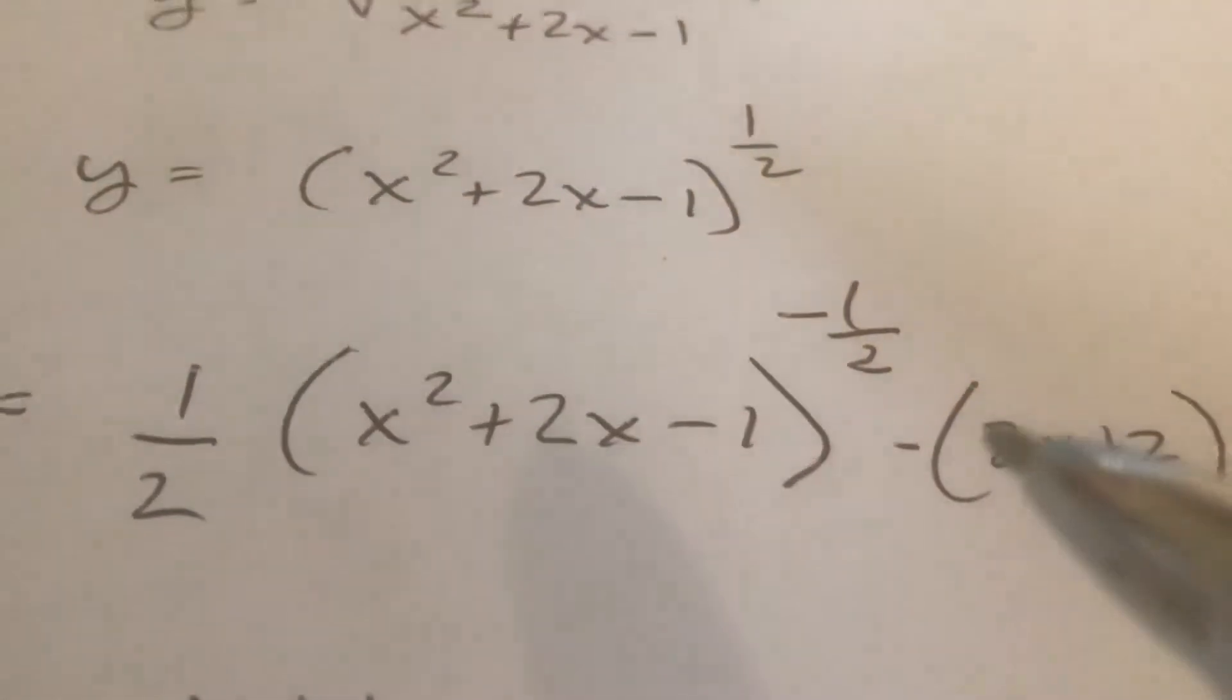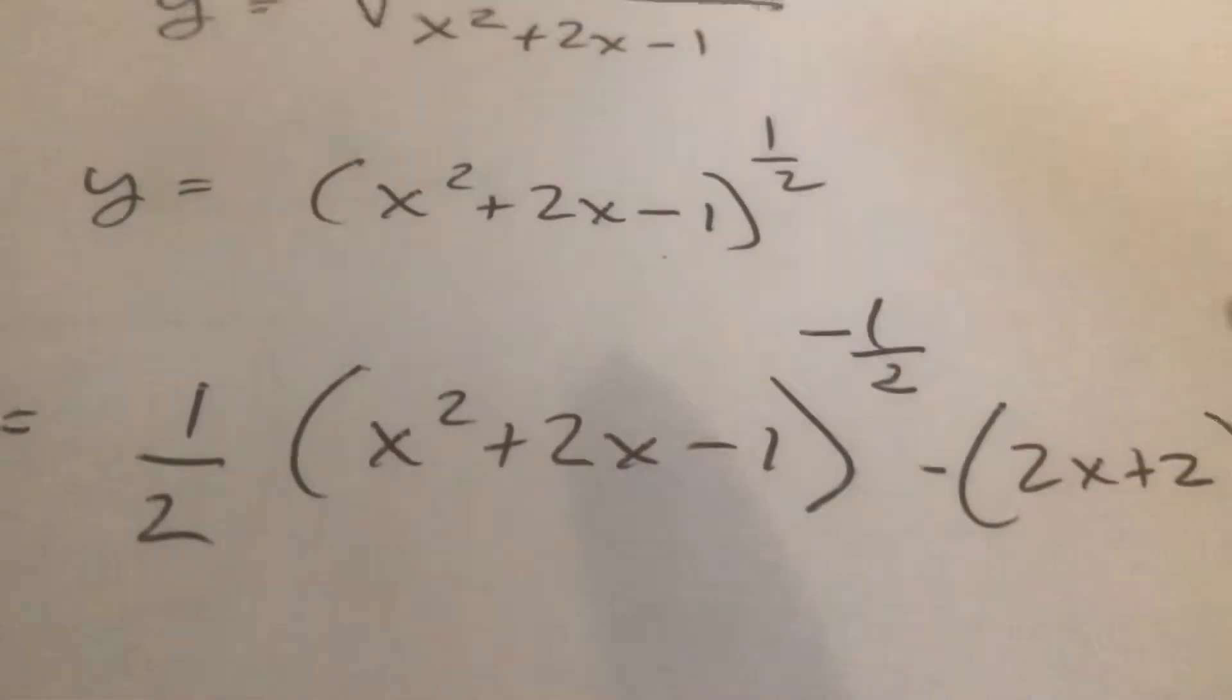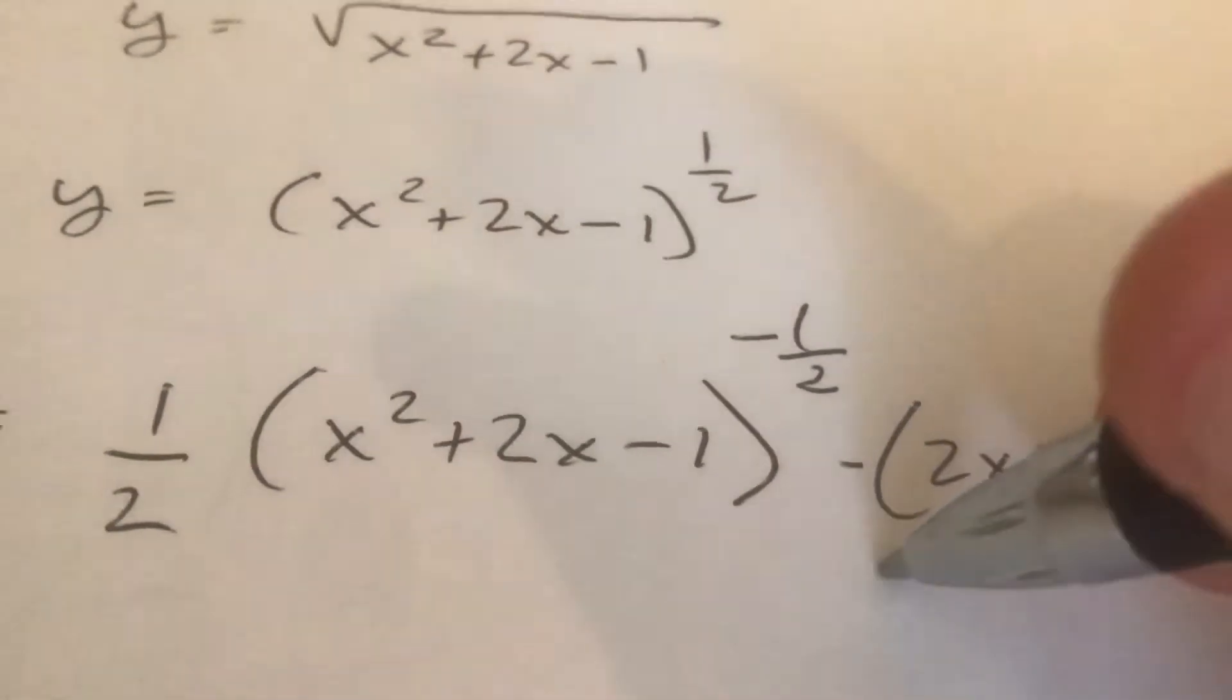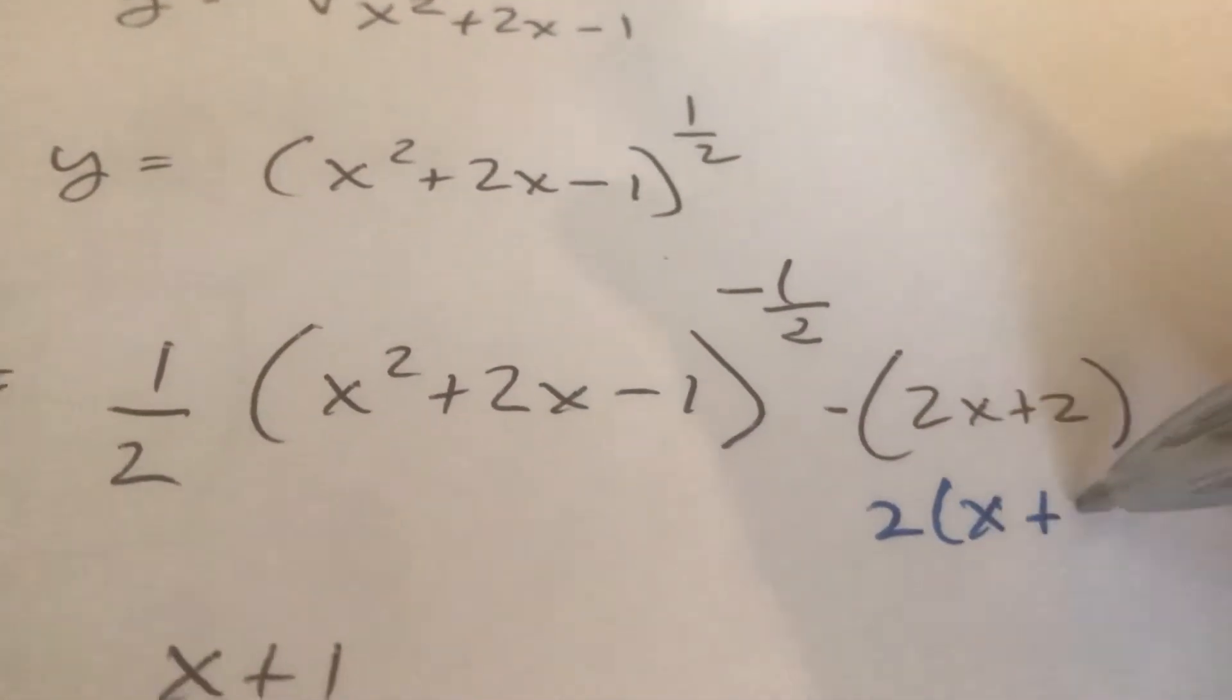So the derivative of x squared is 2x and the derivative of 2x is 2. Now this can be factored as 2x plus 1 and the 2's can cancel.